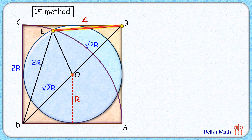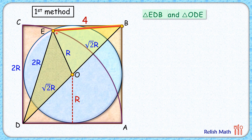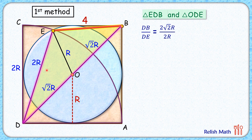Let's join EO. Here EO is the radius of this blue circle, and thus it is r centimeters. Now we will prove two triangles to be similar: the first triangle is triangle EDB — this yellow triangle — and the second is triangle ODE. In triangle EDB, we take the ratio of sides DB to DE, which is 2 root 2r upon 2r. The r's and the 2's cancel, giving a ratio of root 2 to 1, with angle alpha between them.